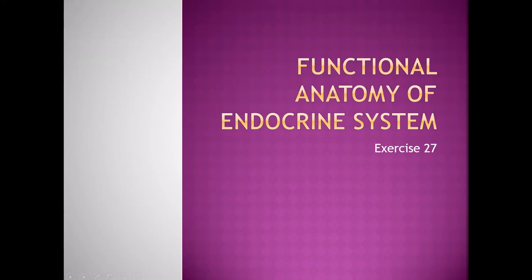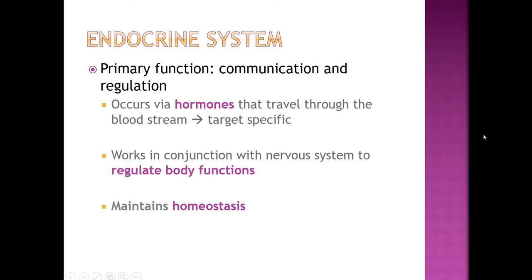Welcome students to the functional anatomy of the endocrine system, which is exercise 27. The endocrine system is one of our two main regulatory systems — one of the ways our body communicates with other parts of the body. Unlike the nervous system, which uses action potentials, the endocrine system uses hormones: little chemical messengers that travel through the bloodstream that are very target specific. The endocrine system works hand in hand with the nervous system to regulate all of our various body functions.